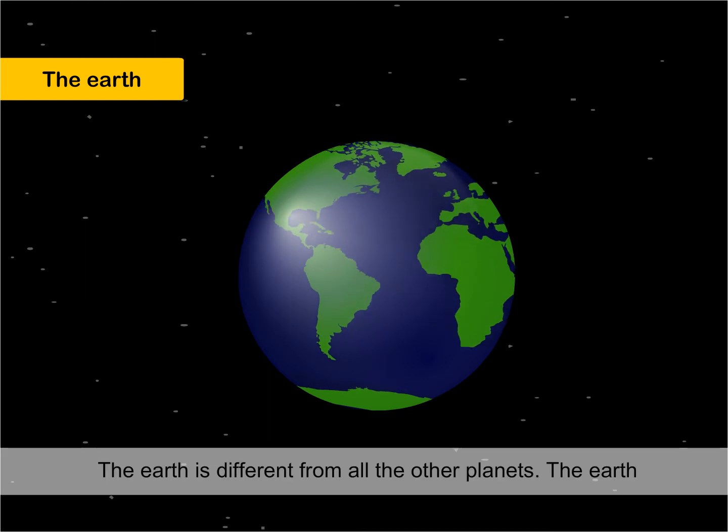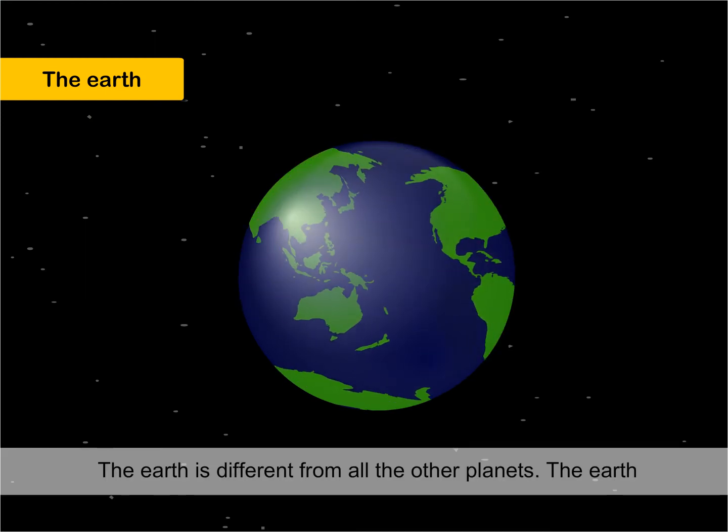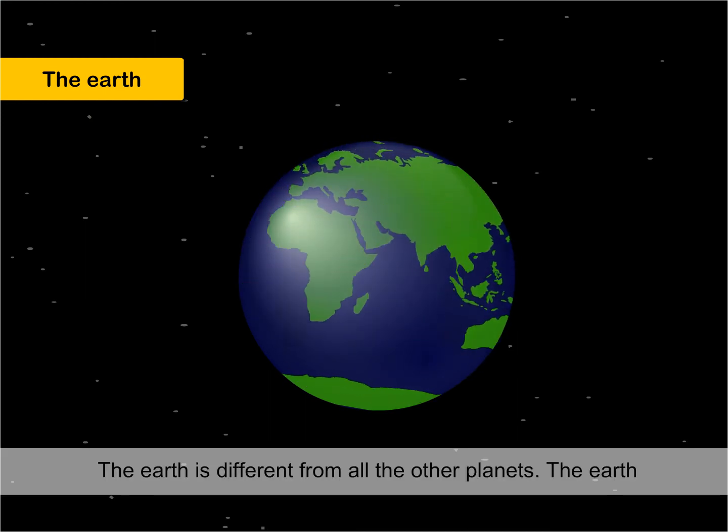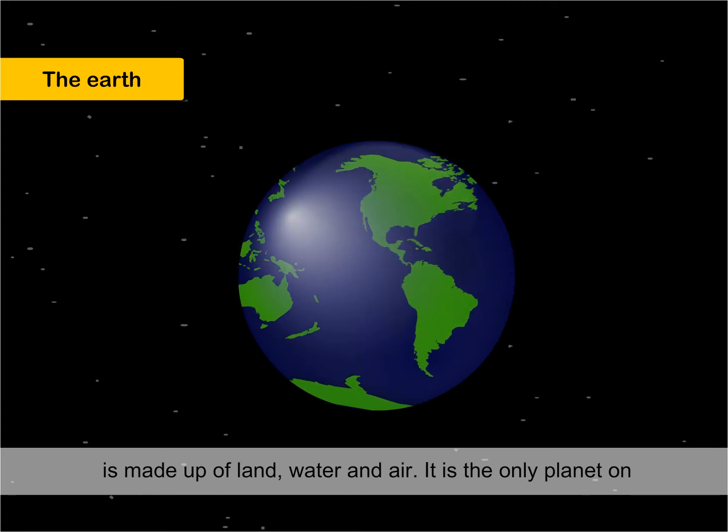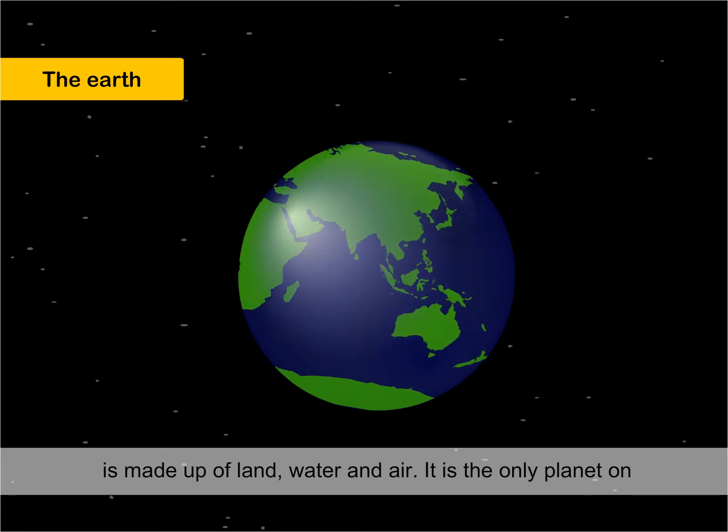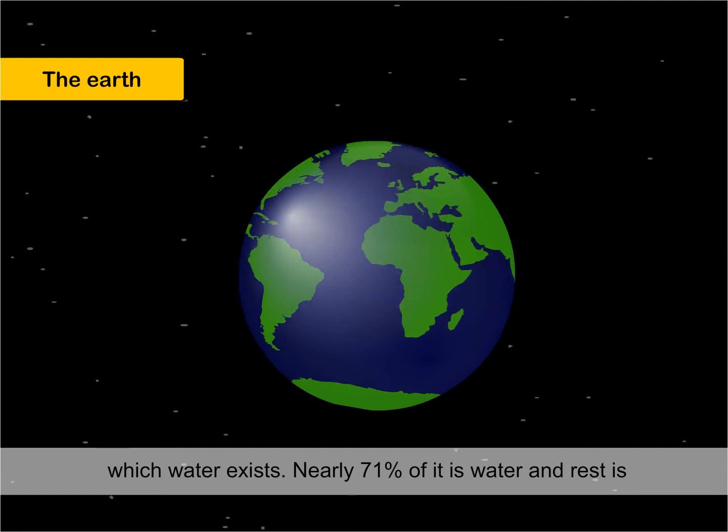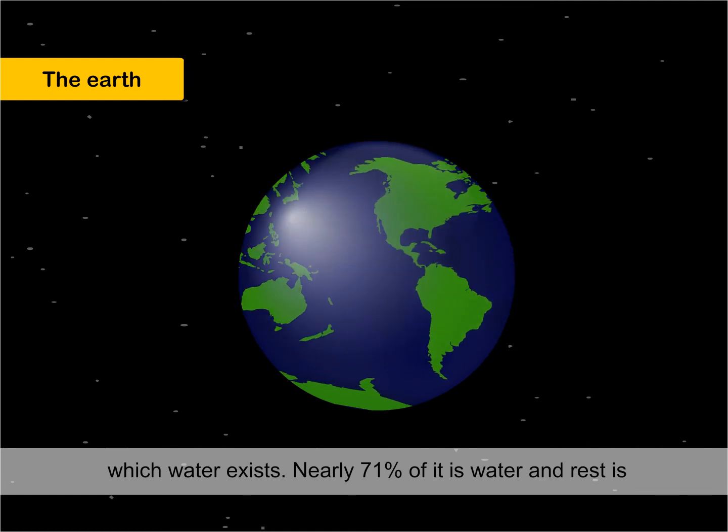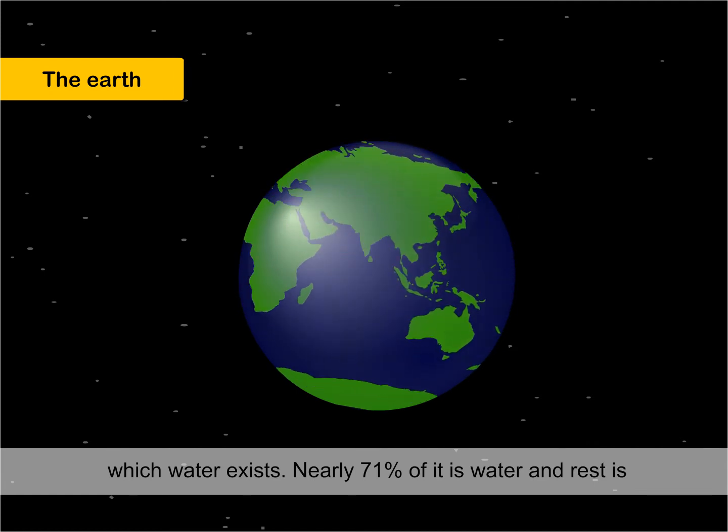The Earth is different from all the other planets. The Earth is made up of land, water and air. It is the only planet on which water exists. Nearly 71% of it is water and the rest is land.